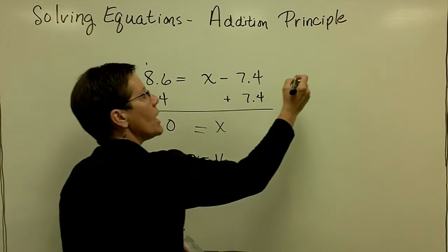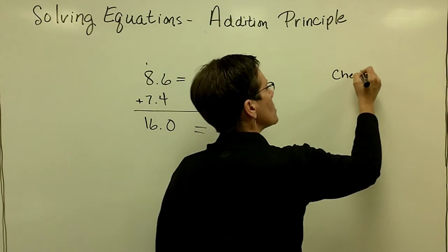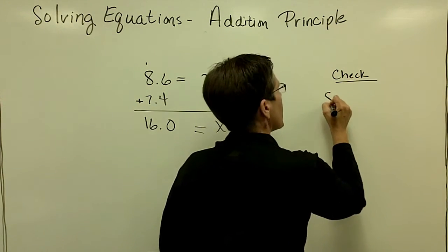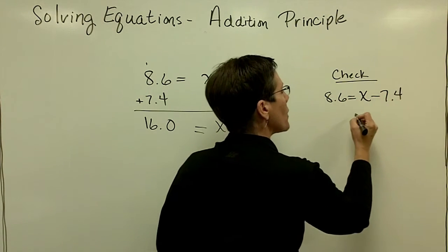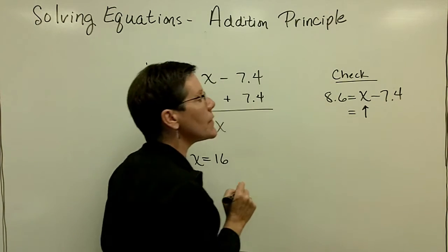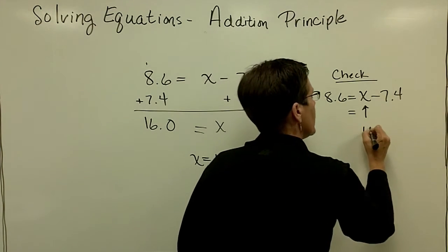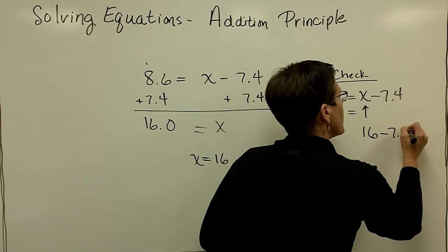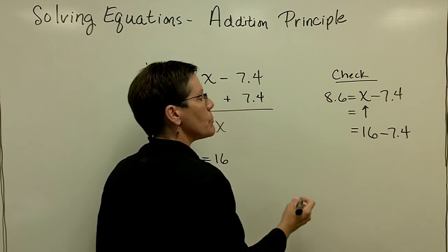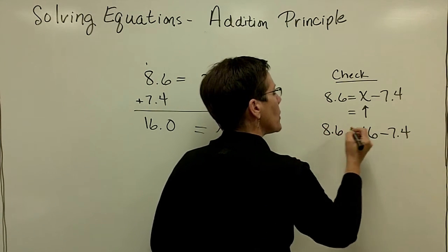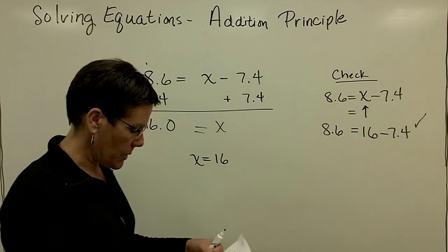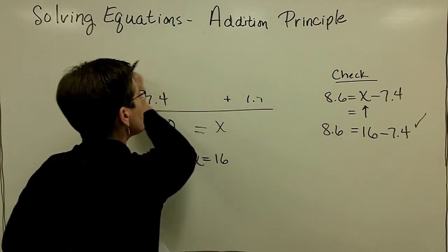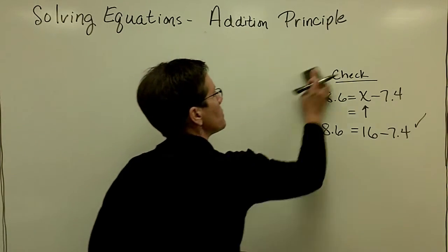Again, my check would be to take the original equation, which was 8.6 equals x minus 7.4, and just substitute right there in for x a value of 16, and just check and see if 16 minus 7.4 is indeed 8.6. It is, and we can say that we're correct with that solution. Finally, one last problem until we take a look at the multiplication principle.